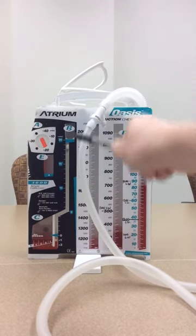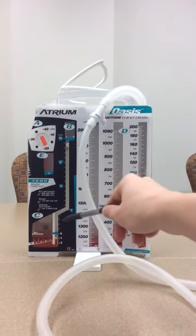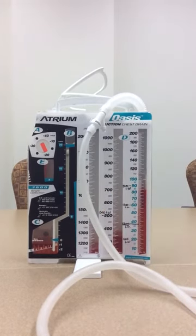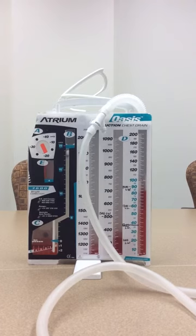B is your water seal, and C is your air leak monitor. This lets you know if there's a compromised system where there's either continuous bubbling, intermittent bubbling, or no bubbling at all.